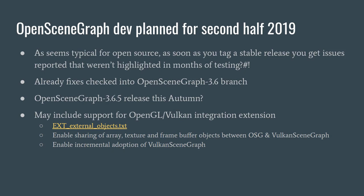As part of the VulkanSceneGraph project, one of the things we want to do is add interoperability between OpenGL applications and Vulkan applications. There's an extension that Khronos has released for OpenGL — the EXT external objects extension — and a similar extension on the Vulkan side, which allows us to share arrays, textures, and framebuffer objects between OpenGL and Vulkan. For our community that means between OpenSceneGraph applications and VulkanSceneGraph applications.